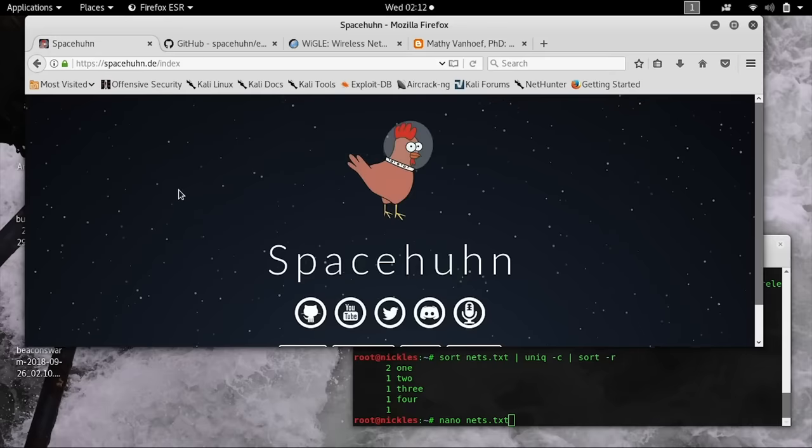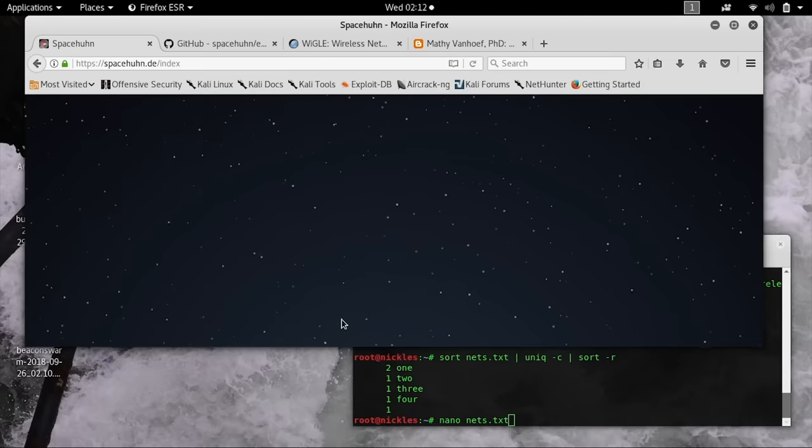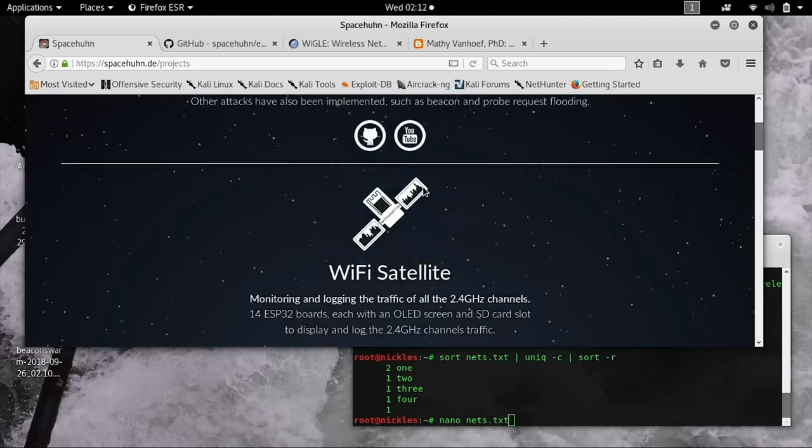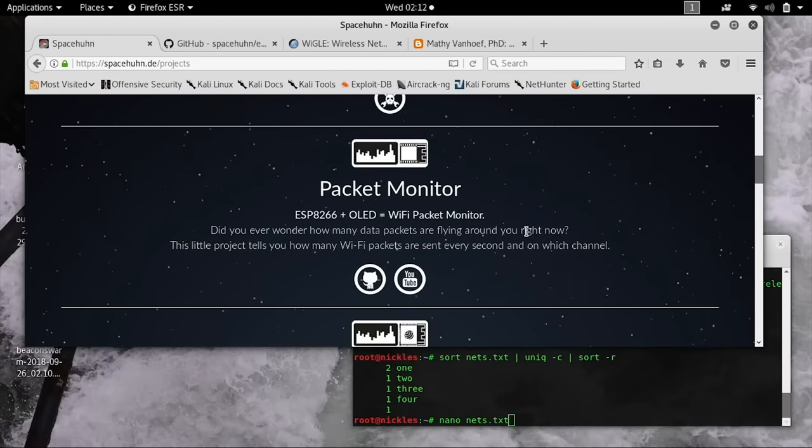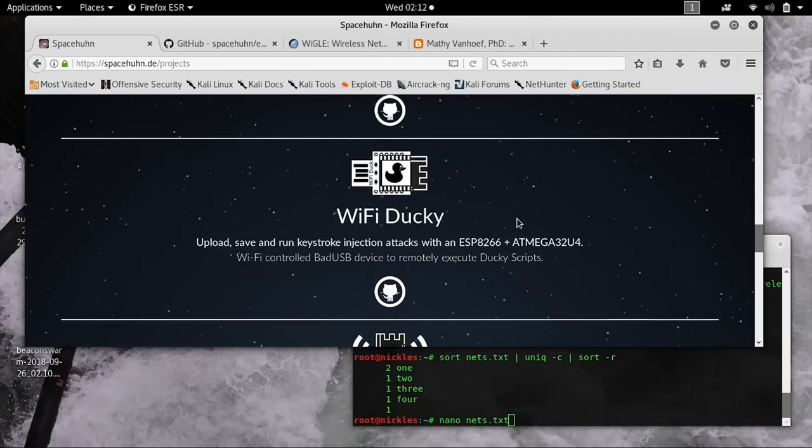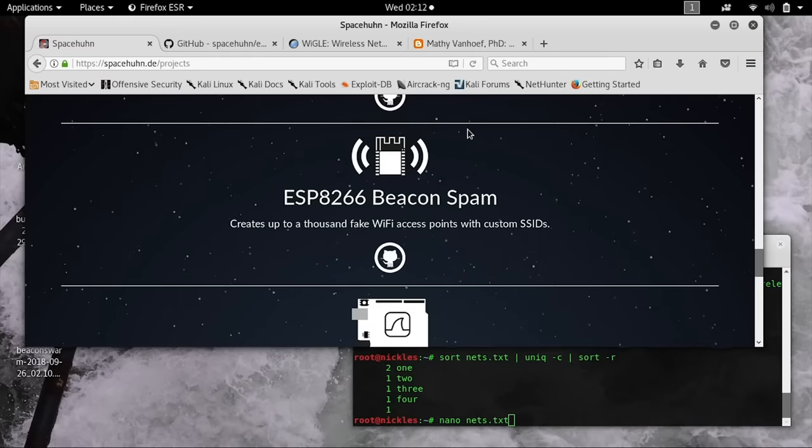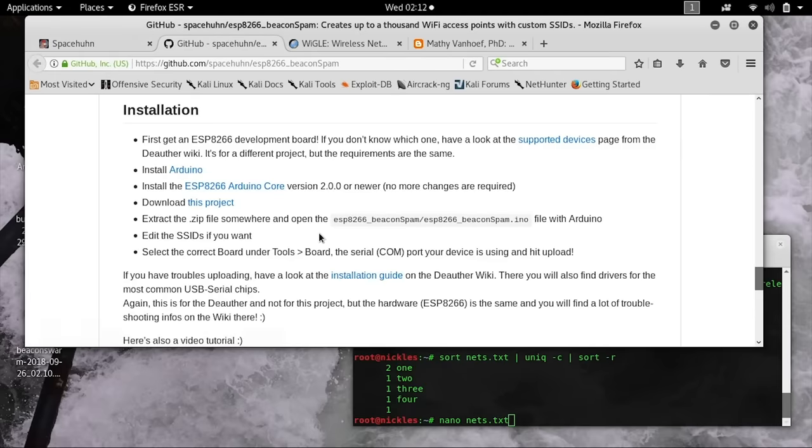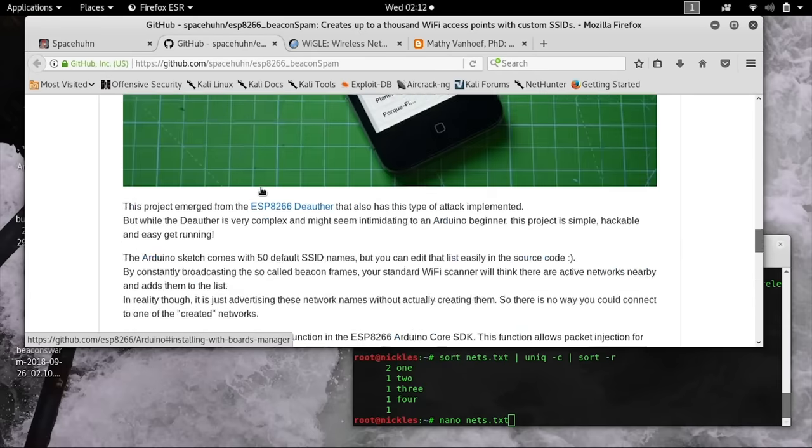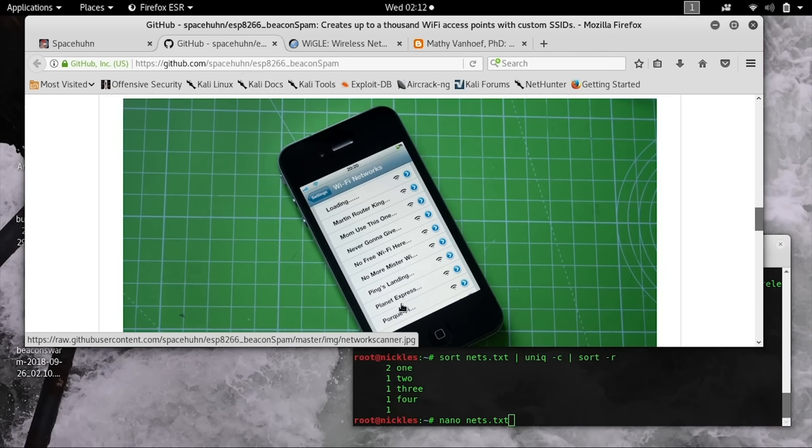We're going to use Space Hoon's excellent project, which you can find at his website spacehoon.de under projects. He's worked on a lot of really awesome stuff, and you should definitely check this out if you're interested. He also has a Patreon if you think this project's cool and want to support more cool stuff. We're going to go to the ESP8266 Beacon Spammer.